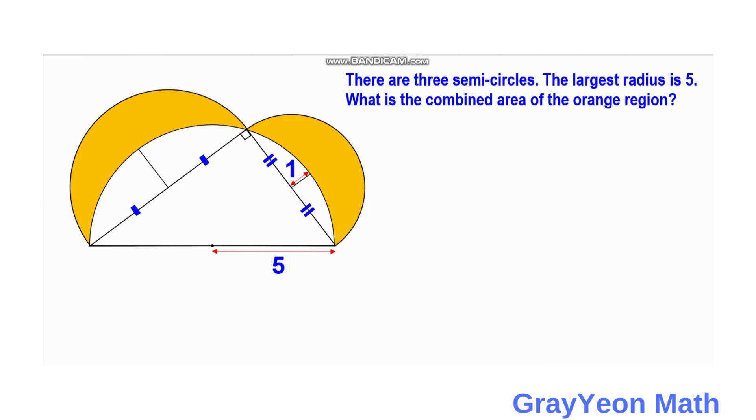Welcome to GrayonMath. We are asked to solve this problem. There are three semicircles. The largest radius is 5. What is the combined area of the orange region?